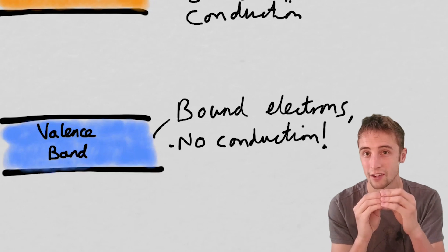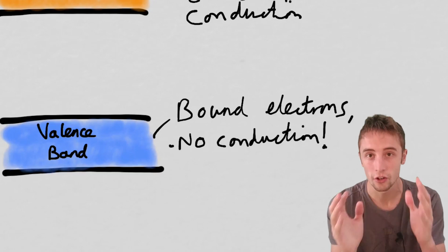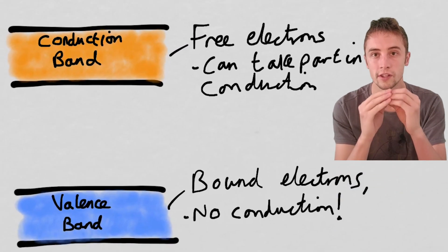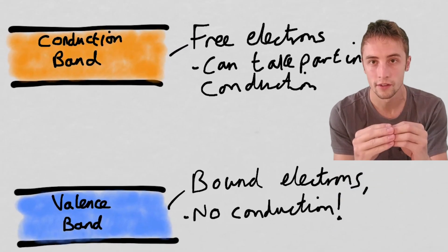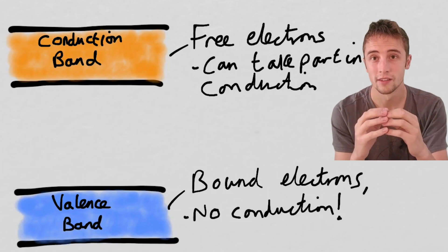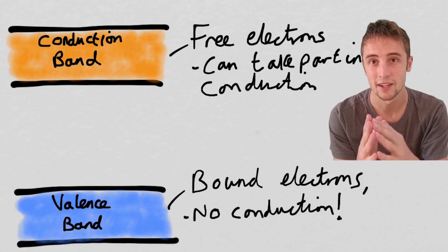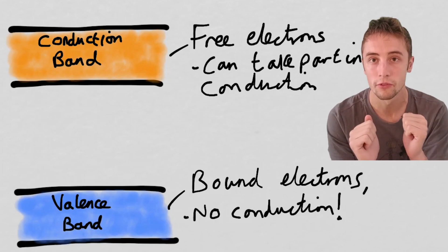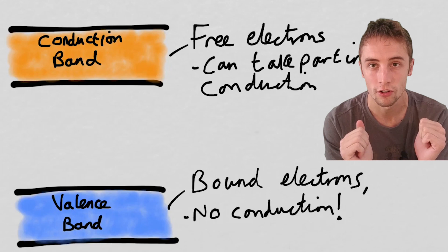However, electrons in the conduction band are free to move throughout the entire structure. They are delocalized, and they can take part in conduction because they can move through the entire structure.